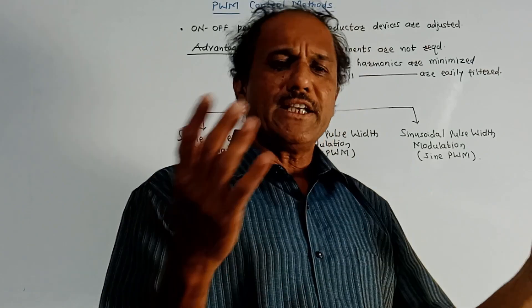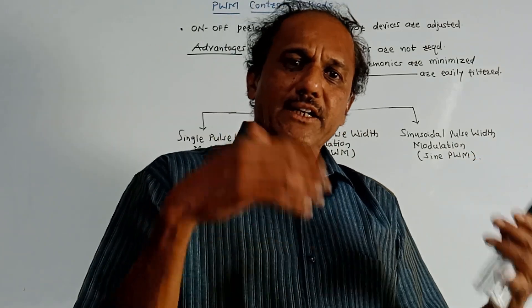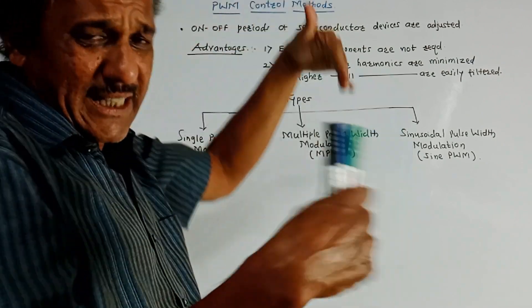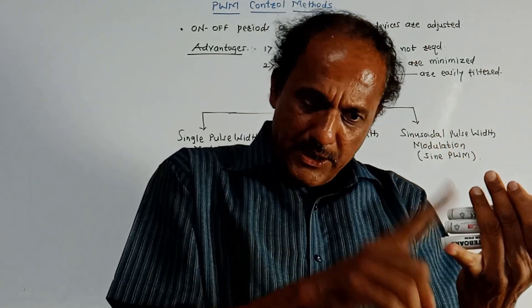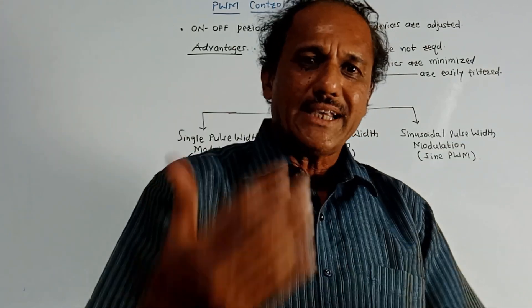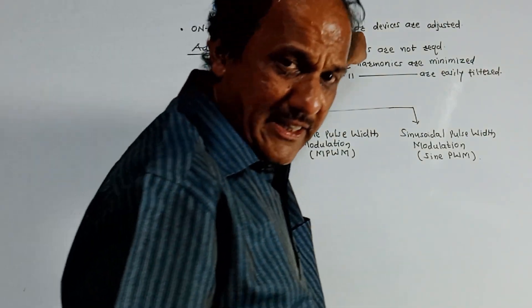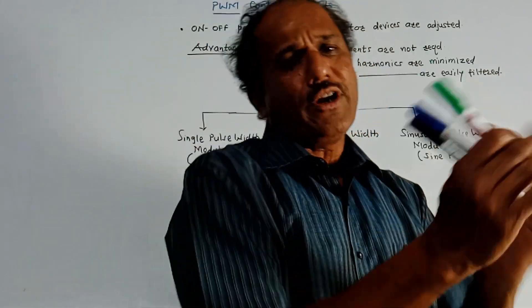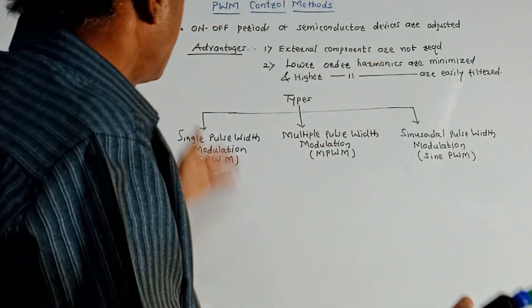From the example point of view, we may explain the question like this: What is PWM control method? What are its types? Explain it along with suitable waveforms. So in this method, this is basically a voltage controlling method. We want to vary the output AC voltage. In PWM technique, all on/off periods of the semiconductor devices which are used are varied, and accordingly the AC output voltage of the inverter is varied.